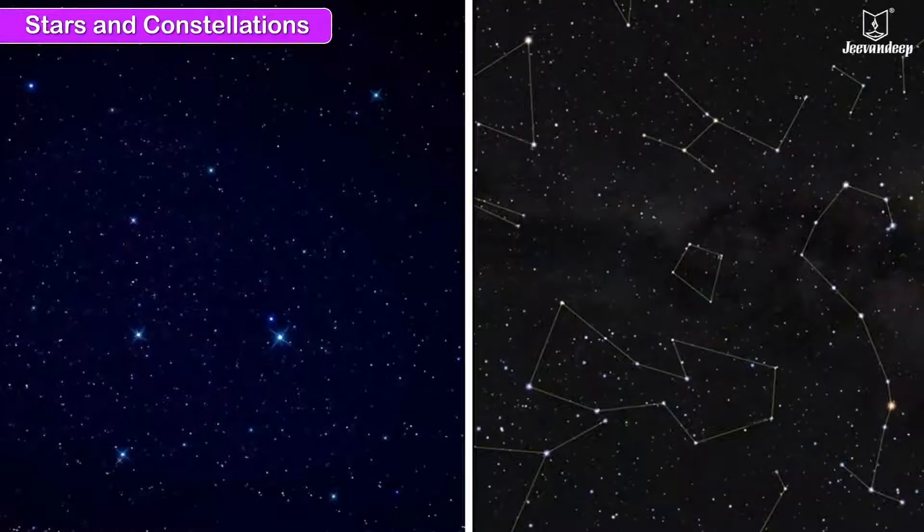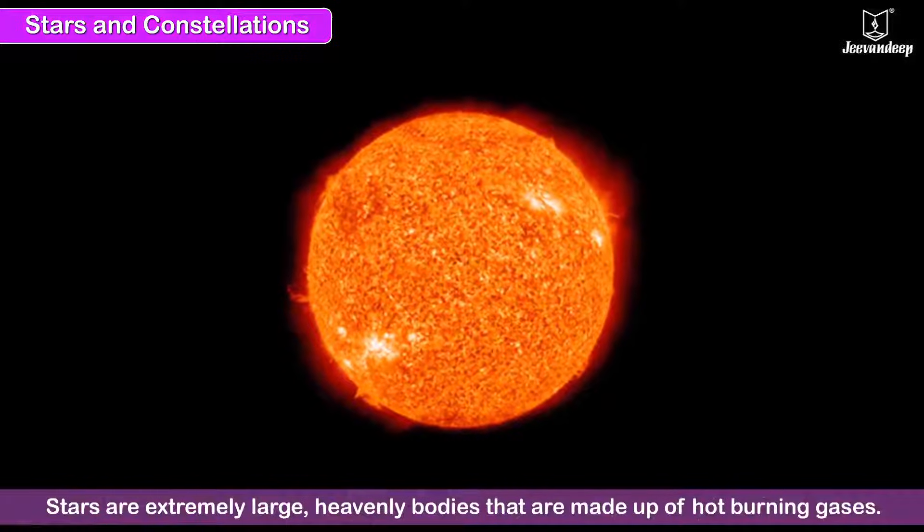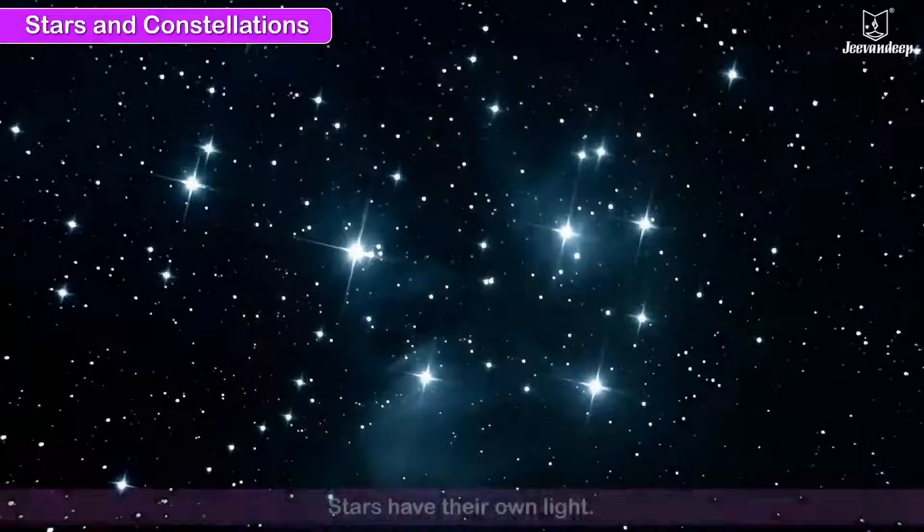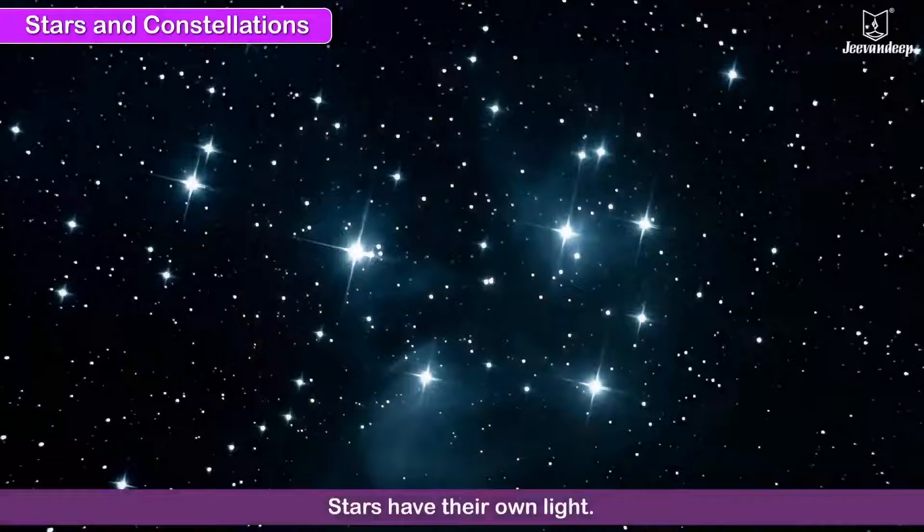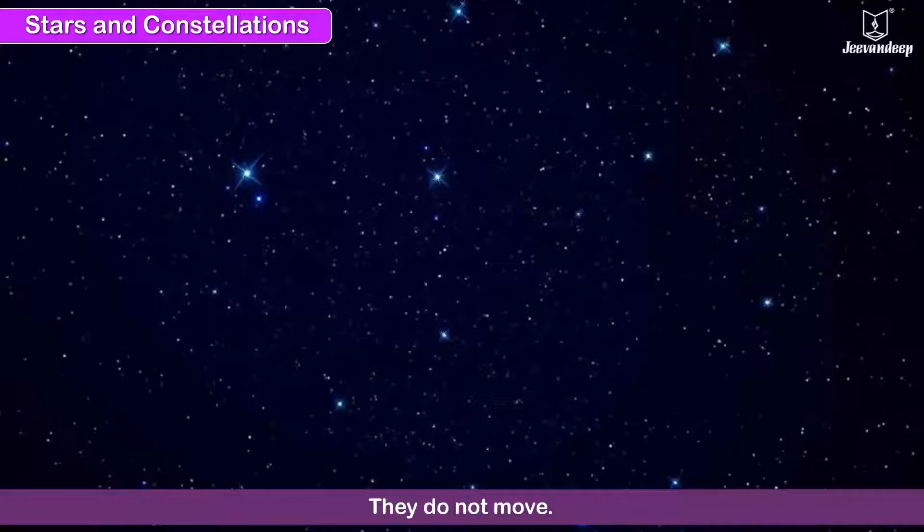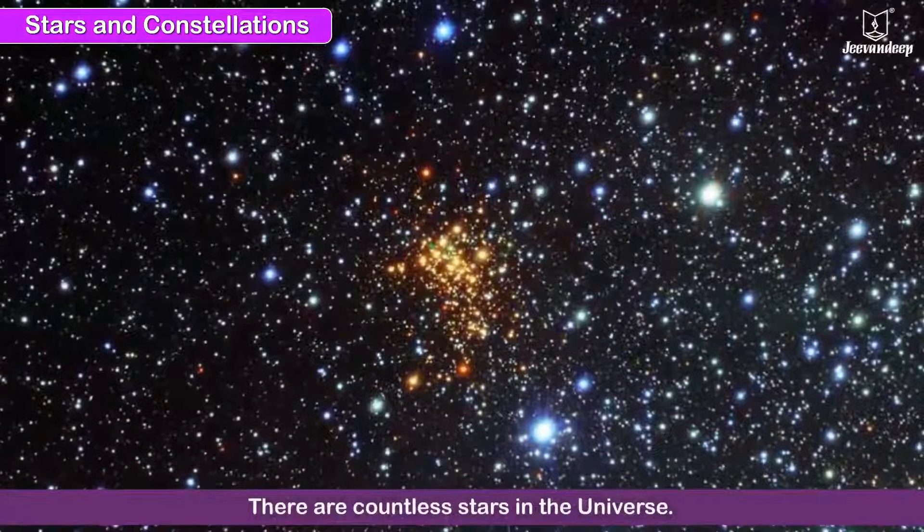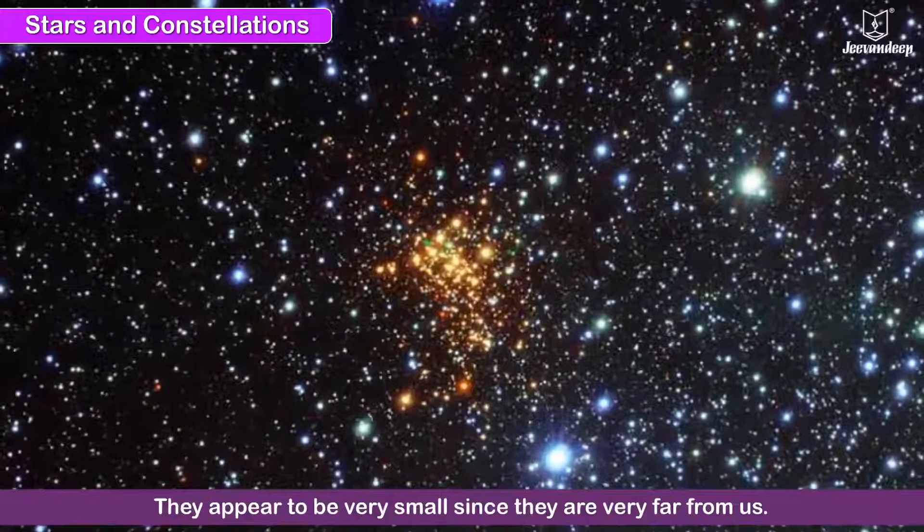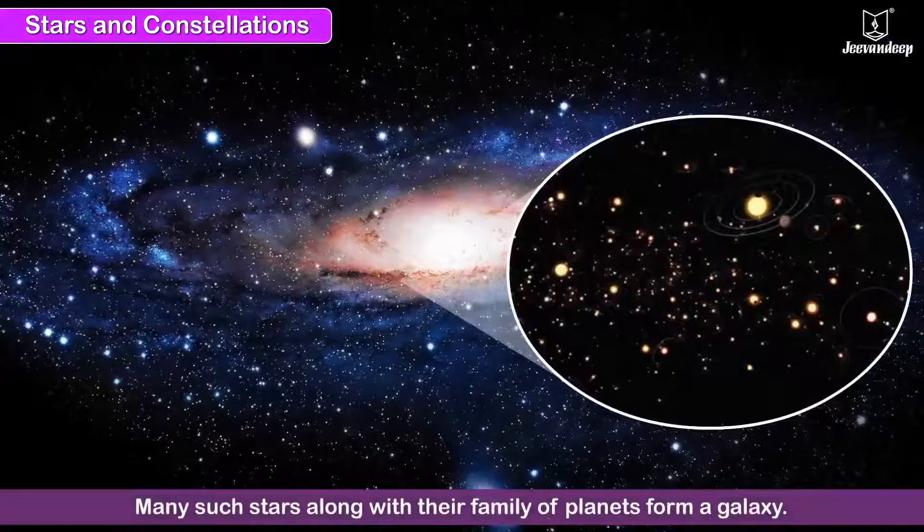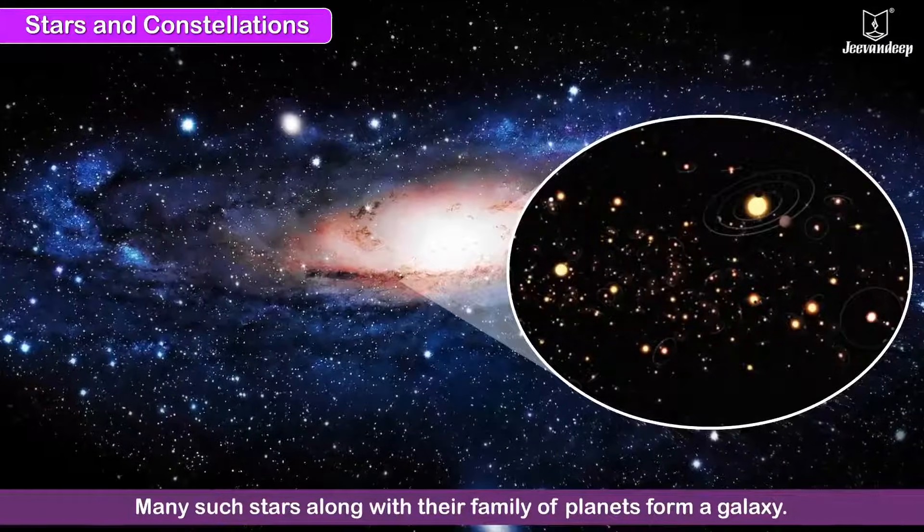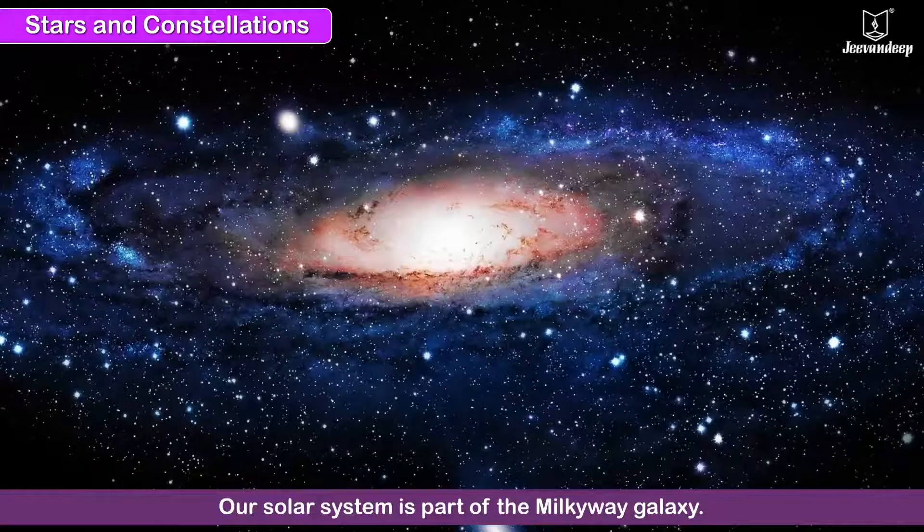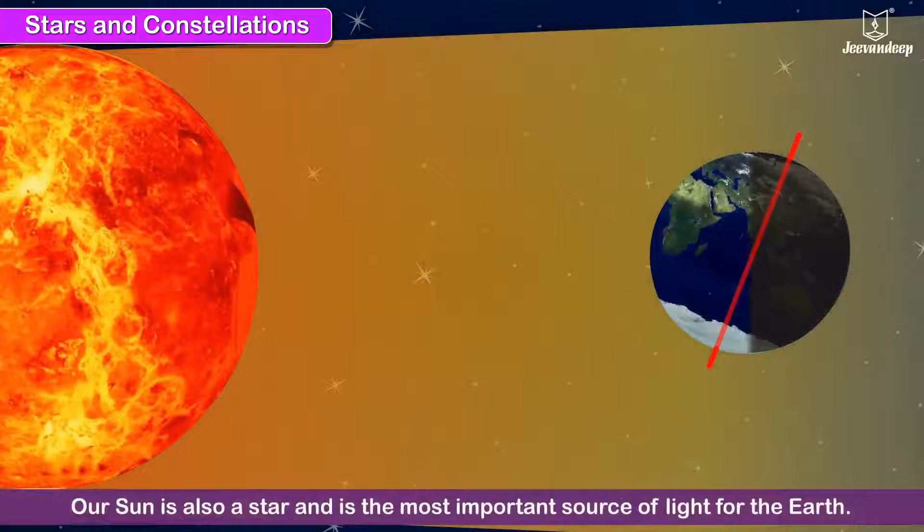Stars and constellations: stars are extremely large heavenly bodies that are made up of hot burning gases. Stars have light of their own. They do not move. There are countless stars in the universe and appear to be very small since they are very far from us. Many such stars along with their family of planets form a galaxy. Our solar system is part of the Milky Way galaxy. Our Sun is also a star and is the most important source of light for the Earth.